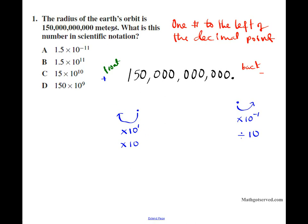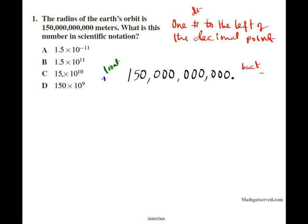So in this problem, we want to write this number in scientific notation, so we're going to be moving the decimal point. Let's look at the options we have — can we eliminate options? This number has two digits to the left. Remember, we need only one digit to the left. This has two digits — too much. This has three digits — one, two, three — to the left of the decimal. That's too much. So these are my two candidates.